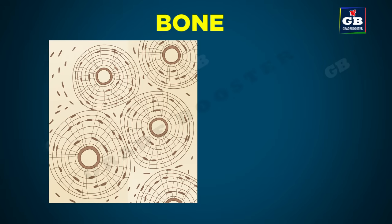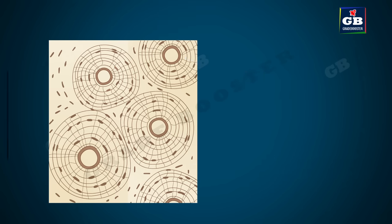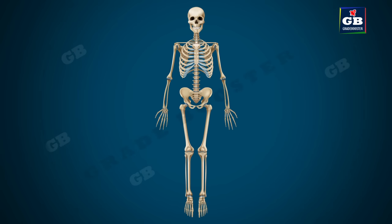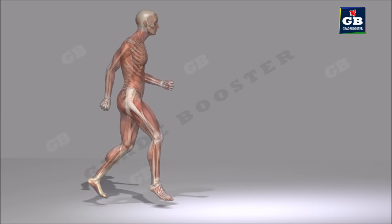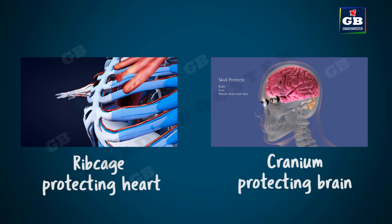Now let us see bone. Bone is a strong and non-flexible connective tissue. The cells of bone are embedded in a hard matrix composed of calcium and phosphorus compounds. Bone forms the supportive framework of our body, holds muscles tight and helps in movement, and forms hard cases that protect sensitive internal organs.